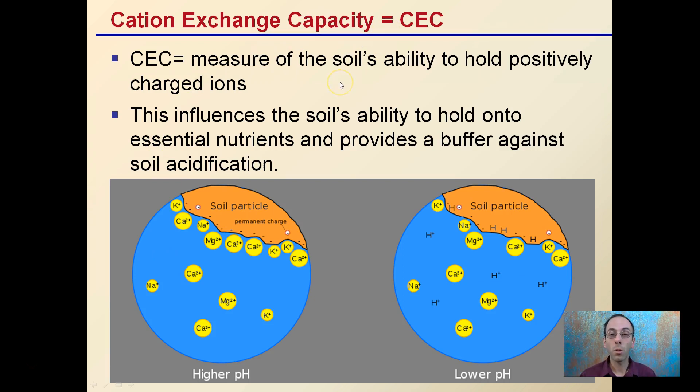This is the measure of the soil's ability to hold positively charged ions. Those are important, as we see the positively charged ions mentioned here are a lot that are associated with major nutrients needed by the plants. The CEC influences the soil's ability to hold onto essential nutrients and provide a buffer against soil acidification. So we see that the soil particle here has that typical permanent negative charge, and that's going to attract or hold these positive ions, which tend to have a lot of the nutrients that the plants need.